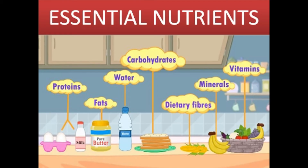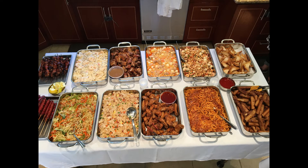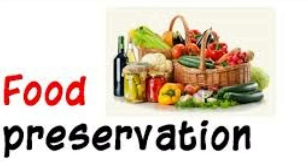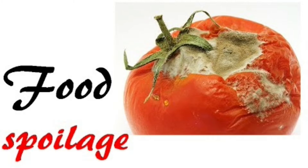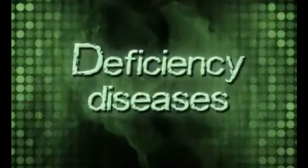Our diet must contain essential nutrients such as proteins, carbohydrates, fats, vitamins and minerals. We should not overcook food because it destroys the nutrients in the food. Store food properly — if not, it may get spoiled. When we eat such food, it may cause diseases. In this condition, our body does not function properly and because of unhealthy symptoms, the body results in deficiency disease.